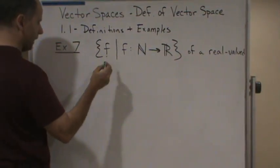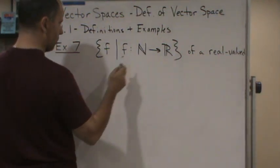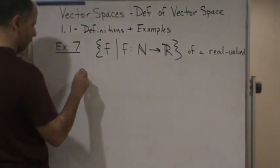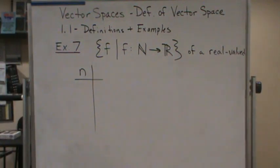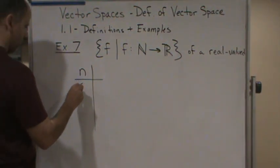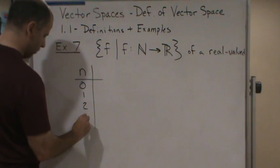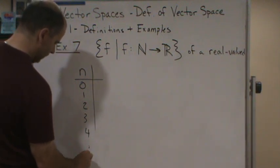So we're going to go from the natural numbers to the real numbers. So if we have a table of values, the natural numbers would be 0, 1, 2, 3, 4, and so on.